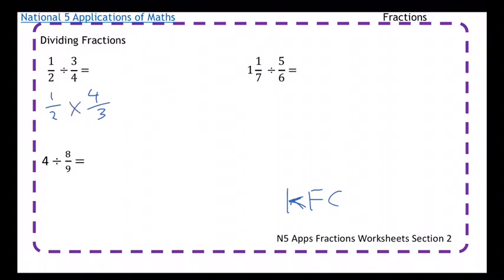From there on, it's just exactly what we've been doing. Multiply straight across - along the top, along the bottom. So 1 times 4 is 4. 2 times 3 is 6.